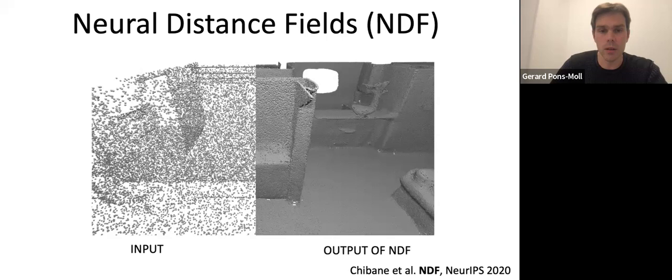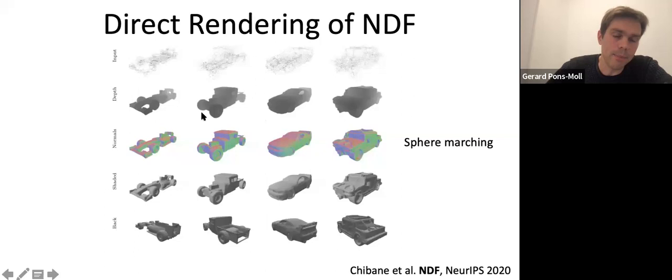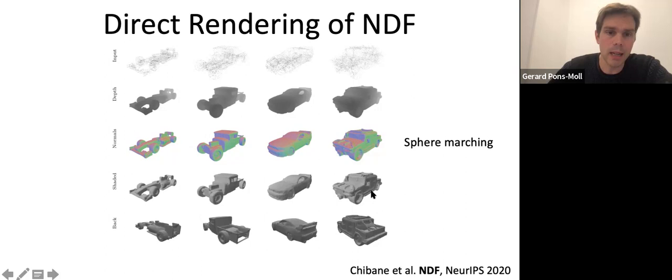We can also use computer graphics techniques to render the depth map directly without recovering the surface — this technique is called sphere marching. You can just render the depth image given this unsigned distance field.